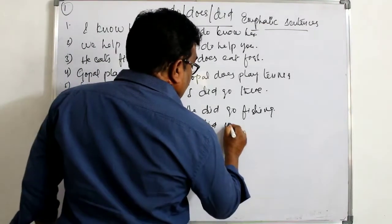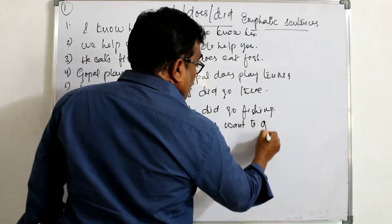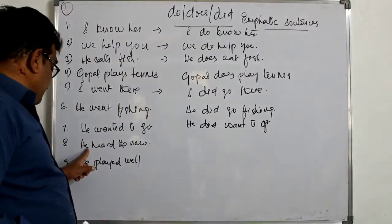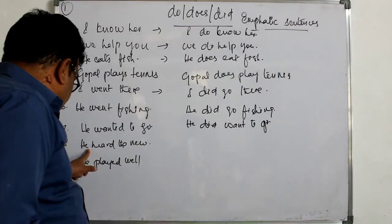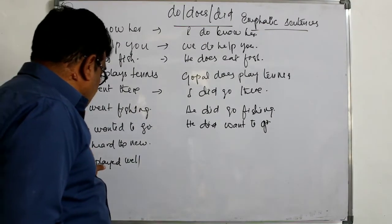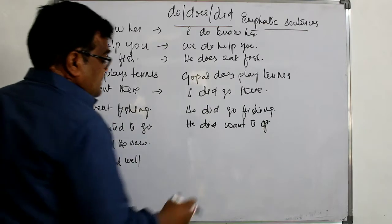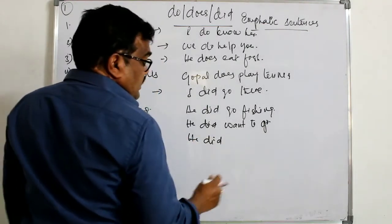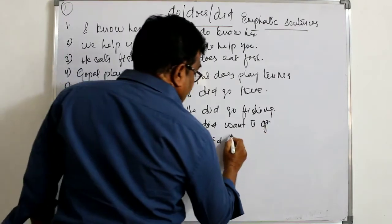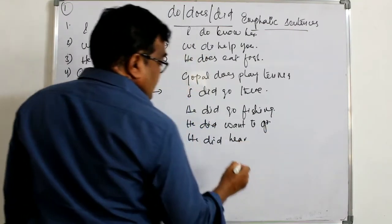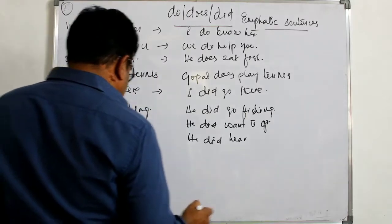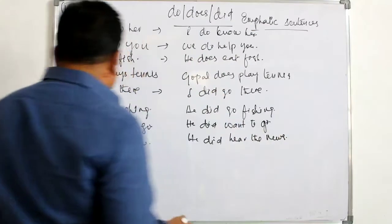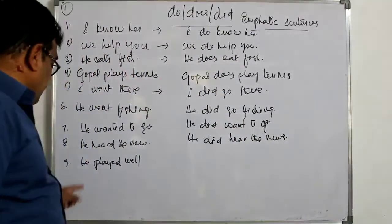Next example: 'He wanted to go' — this is also in past tense. The V1 form of 'wanted' is 'want,' so the emphatic sentence becomes: 'He did want to go.' Another example: 'He heard the news' — this is also in past tense.